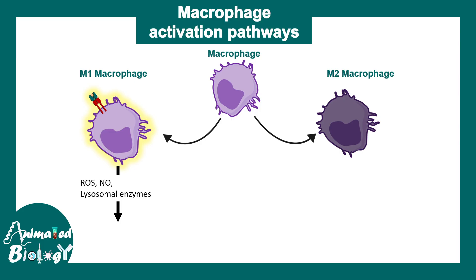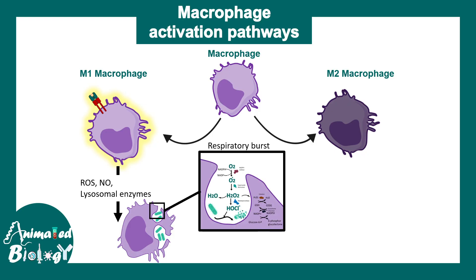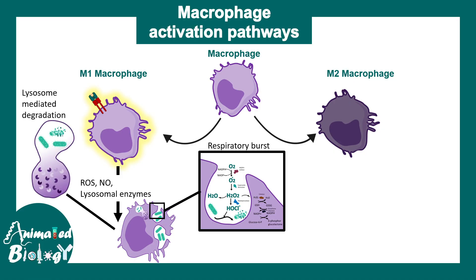M1 macrophages can engulf pathogens such as bacteria and they use reactive oxygen species or reactive nitrogen species to kill these pathogens using a process known as respiratory burst. They can also kill the pathogen via lysosome-mediated degradation and they also secrete cytokines. Many of these cytokines are pro-inflammatory in nature, so they are potent drivers of inflammation. In fact, M1 macrophages are the key driver of chronic or prolonged inflammation.